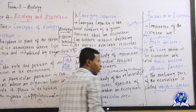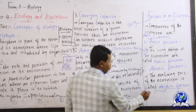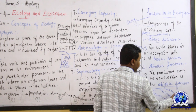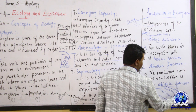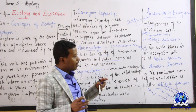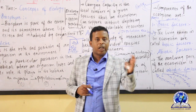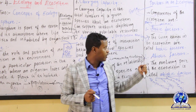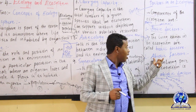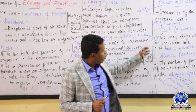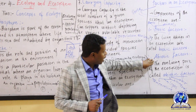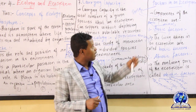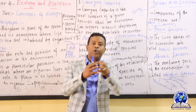Biotic factors are the living part of the ecosystem. Abiotic factors are the non-living part of the ecosystem. The key difference between the two involves interdependence and interrelationship between living and non-living components.